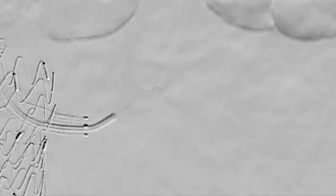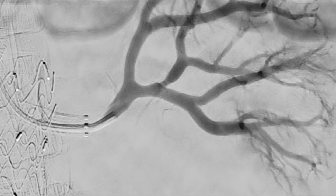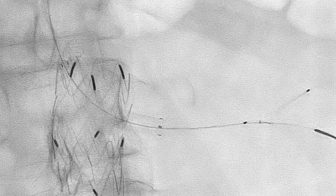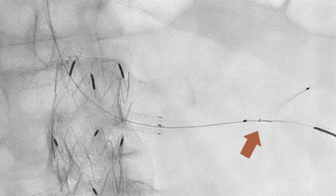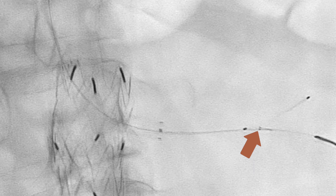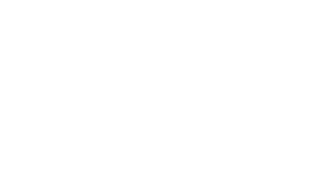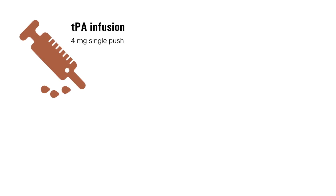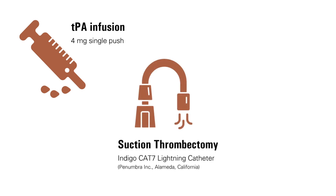We then performed selective angiography and confirmed patency of the distal renal vasculature, as shown here. Following this, we prepared for suction thrombectomy by placing a 5mm SpiderFX embolic protection filter. We also introduced an O18 steel core buddy wire into the left renal artery. Once the filter was deployed, we infused 4 mg of TPA and performed suction thrombectomy using an Indigo Cat7 Lightning catheter.